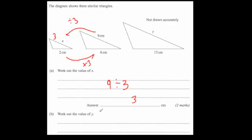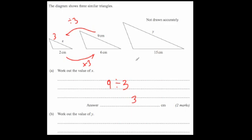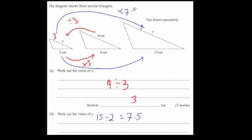For part B, work out the value of y on the biggest triangle. Using the smallest triangle with sides 2 and 3, we find the scale factor from the smallest to the largest: 15 divided by 2 equals 7.5. So the largest triangle is 7.5 times bigger. To get from 3 to y, times by 7.5: 3 times 7 is 21, and 3 times 0.5 is 1.5, so y equals 22.5.